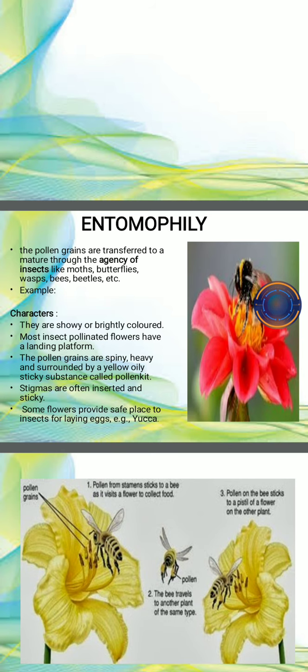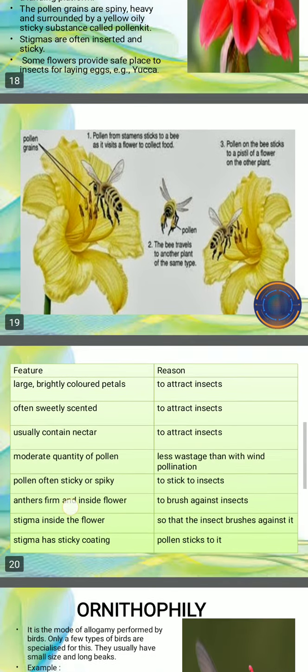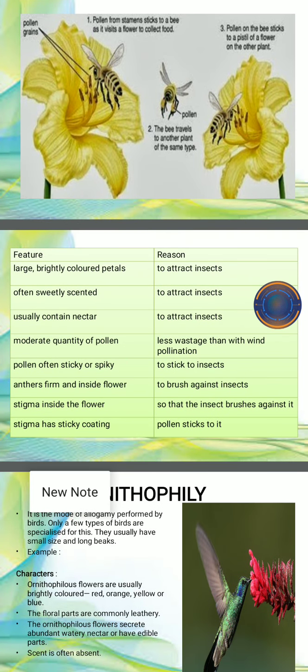Some flowers provide a place for laying eggs. Features to attract insects include large petals, sweet scent, nectar is present, scented flowers, moderate quantity of pollen. The pollens are usually sticky or spiky to stick to the insect, and anthers are positioned inside the flowers to brush against the insects.